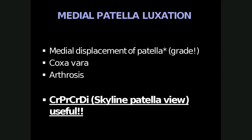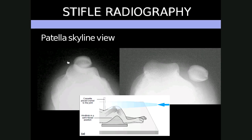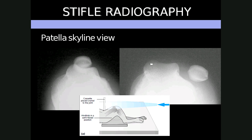Here is an example of a normal patella location within the trochlear groove, and here is an example of it being laterally displaced, with the medial and lateral trochlear ridges visible and the groove appearing slightly shallow.